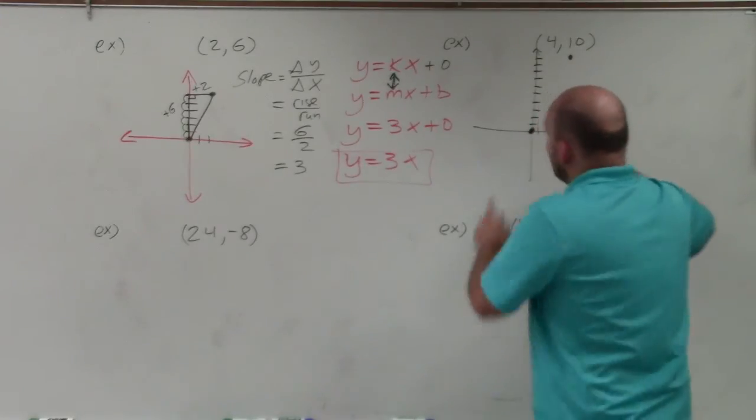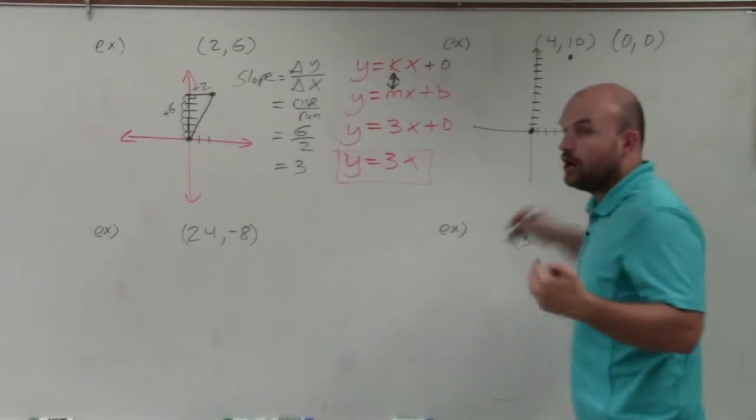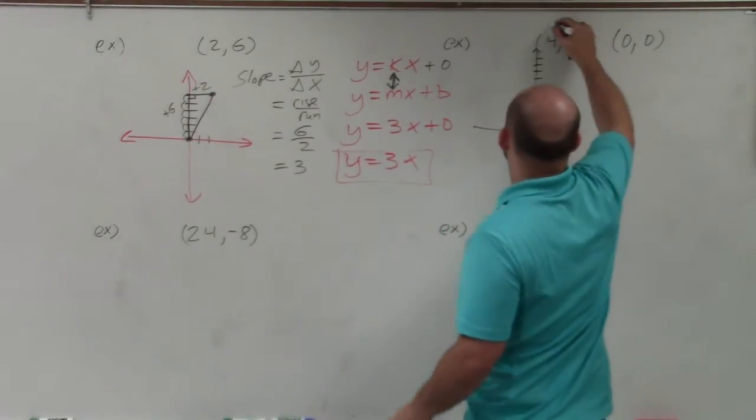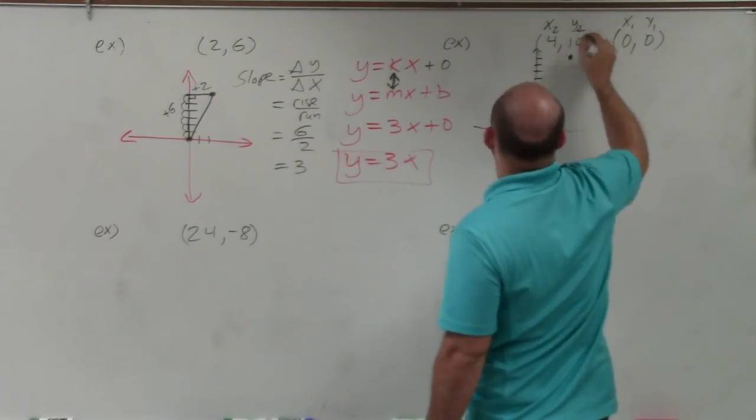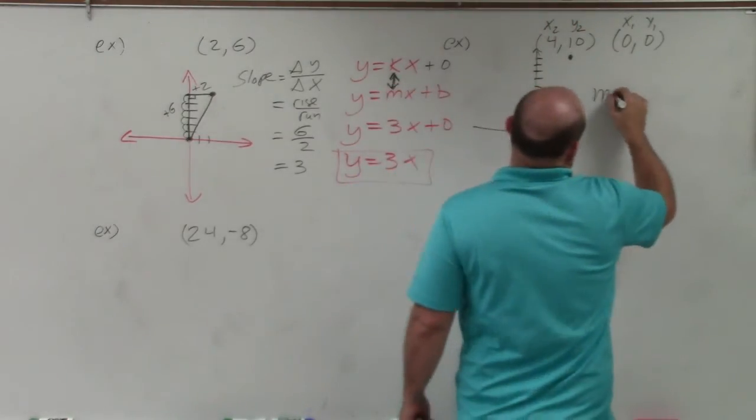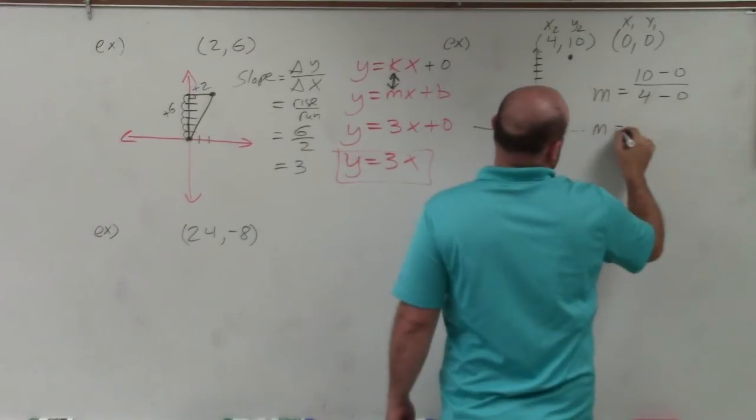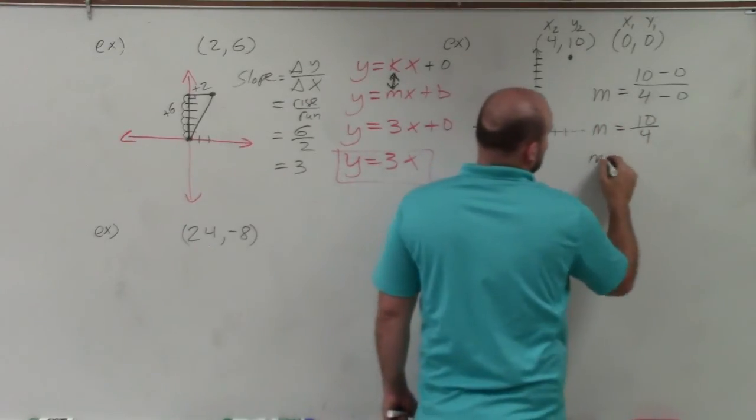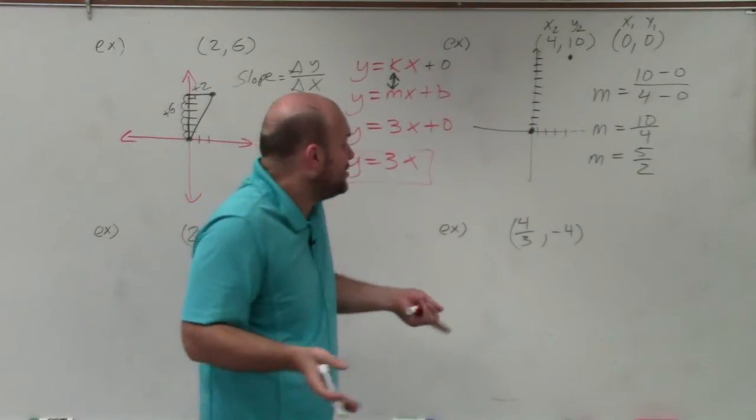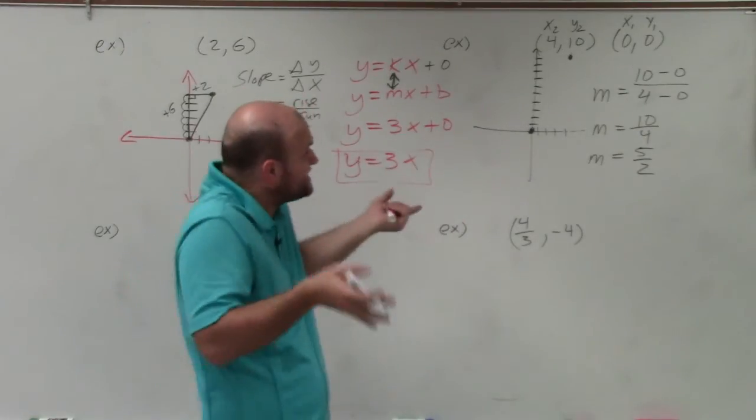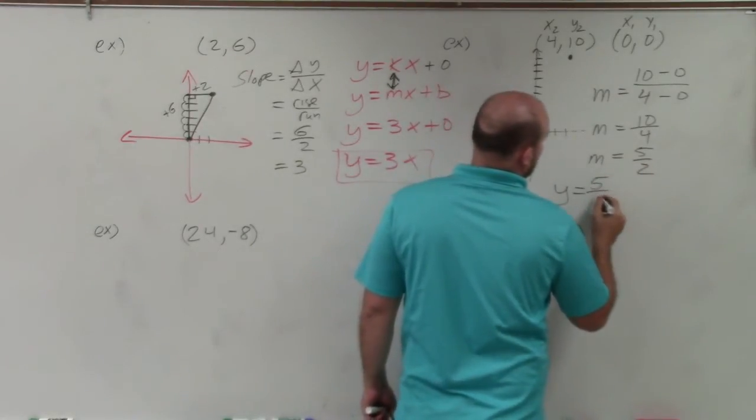And if you have two points, right? Remember that one point is 4, 10. The other point is 0, 0. So if you have two points, you can always find the slope between those two points. So what I would do is I would call this x1, y1. And I would call this x2, y2. Then I would use the slope formula. And watch what happens. It's m equals 10 minus 0 divided by 4 minus 0. m equals 10 divided by 4, which you can reduce by dividing by 2 on top and bottom. You get 5 halves. So that's my slope. And that's all I need to be able to do to write this in direct variation. I just need to figure out what the slope is. So y equals 5 halves x.